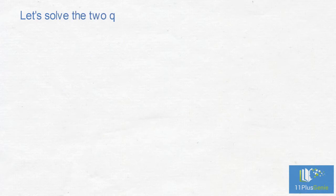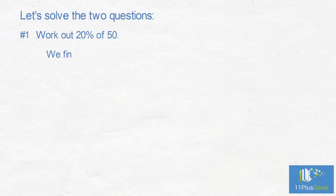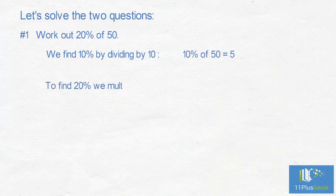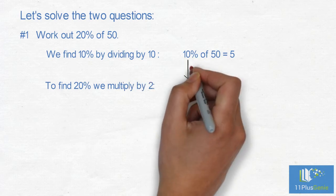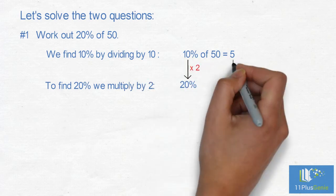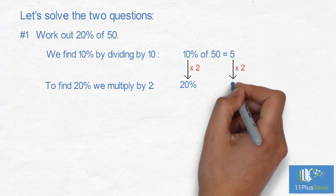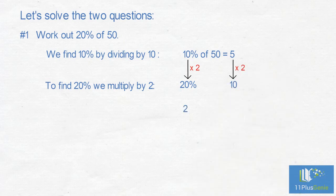Let us solve these two problems. Number 1: Work out 20% of 50. We find 10% by dividing by 10. 10% of 50 equals 5. To find 20% we multiply by 2. 10% times 2 equals 20%, and 5 times 2 equals 10. 20% of 50 equals 10.